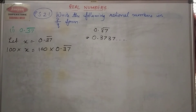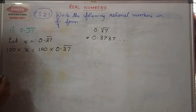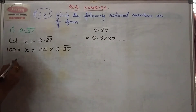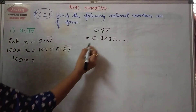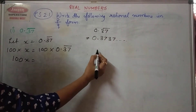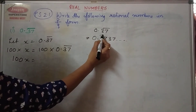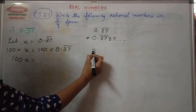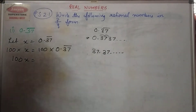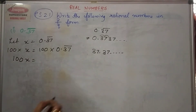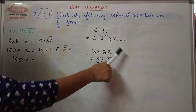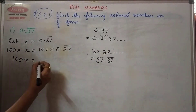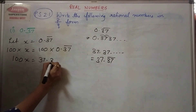We multiply both sides by 100. When I multiply both sides by 100, this becomes 100x on the left side. On the right side, the decimal point shifts by 2 places — one and two — and hence my number becomes 37.37 and so on, which can also be written as 37.37 bar, because this dot indicates that 37 is repeating again and again.